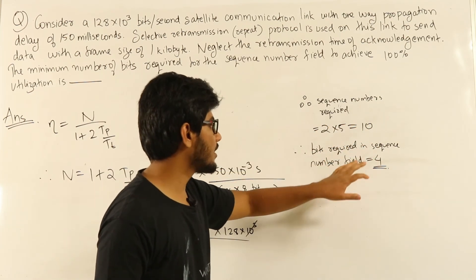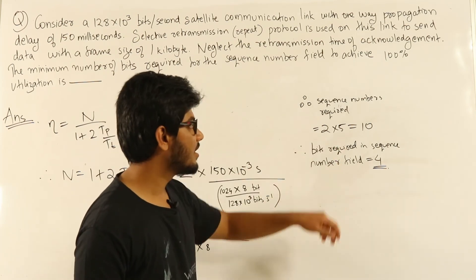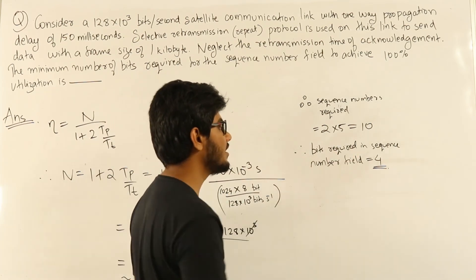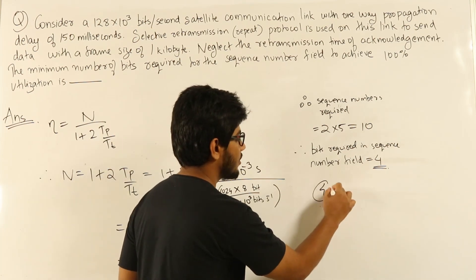Therefore, the number of bits required in the sequence number field is 4 bits. Because with 3 bits we can only have 8 different numbers. To have 10 different numbers, we need at least 4 bits in the sequence number field. So the answer is 4.